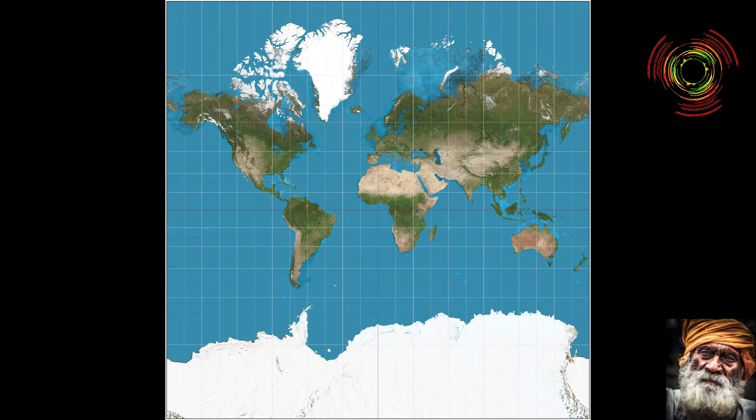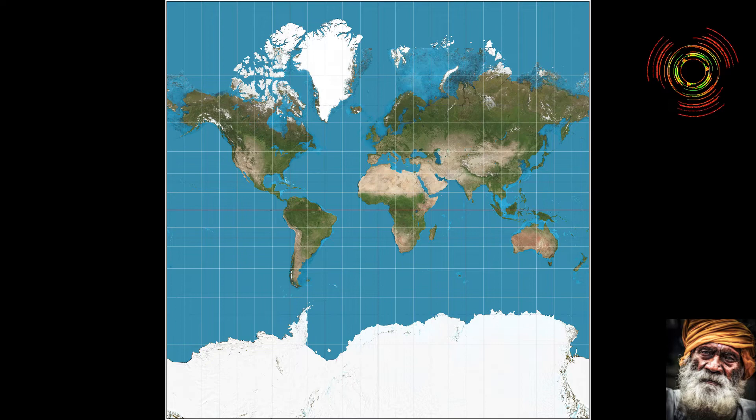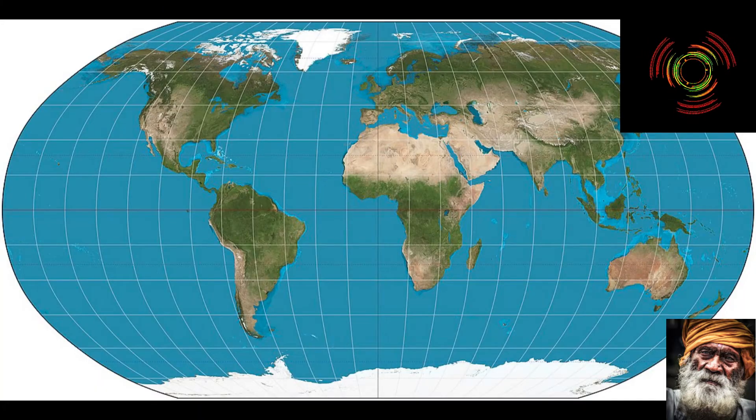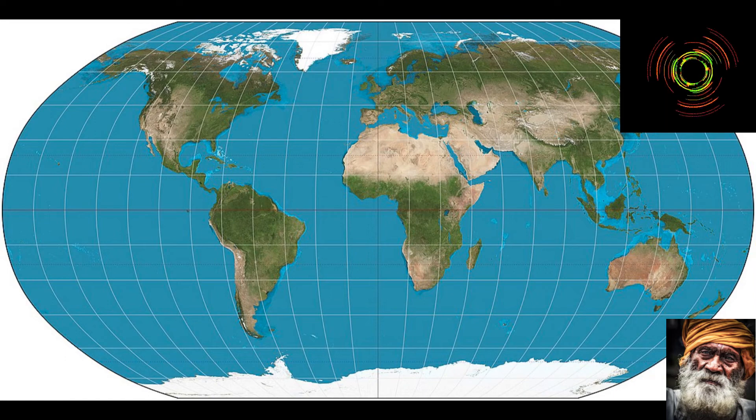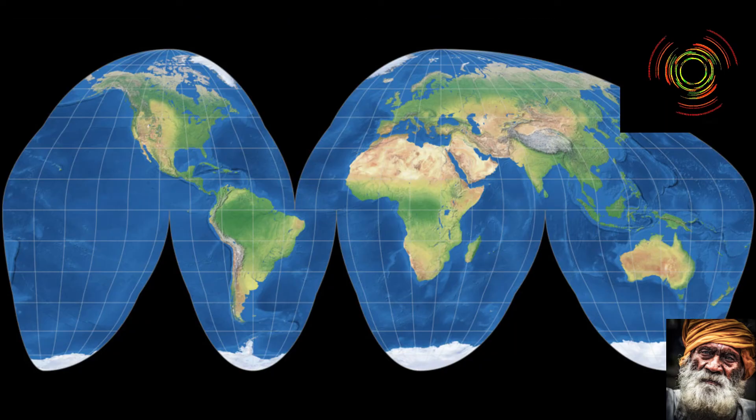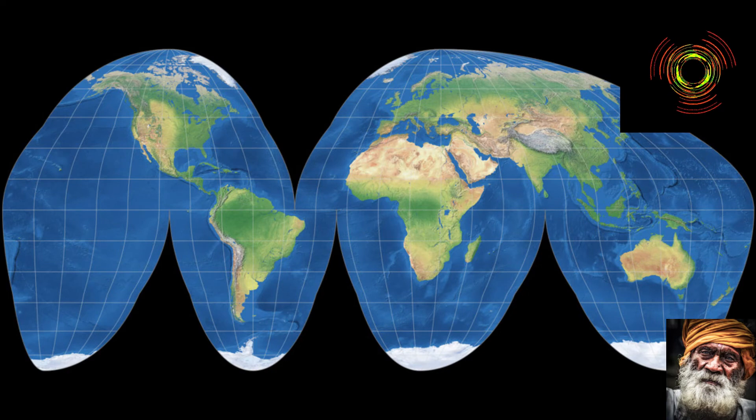First is Mercator projection. It's a cylindrical projection. This is famous for preserving angles and shapes, making it great for navigation. However, it distorts size, especially near the poles. Have you ever wondered why the Greenland looks gigantic on the maps? That's the Mercator projection at work. Next is Robinson projection. Designed to create visually appealing maps, the Robinson projection strikes a balance between size and shape distortion. It's often used for world maps in classroom and atlases. And then there is Goode's homolosine projection.